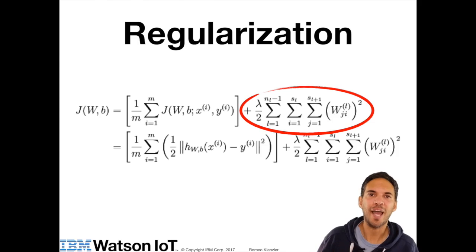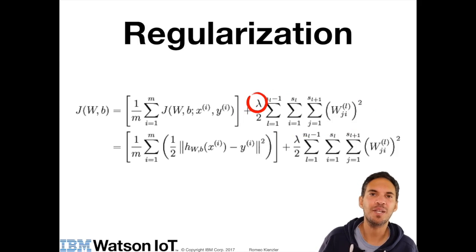If you get high weights, then the cost goes up. Therefore, you are penalizing those high weights, and the neural network tries to fit your data without getting these high weights. How strong you want to influence this regularization, you can specify with the regularization parameter lambda.